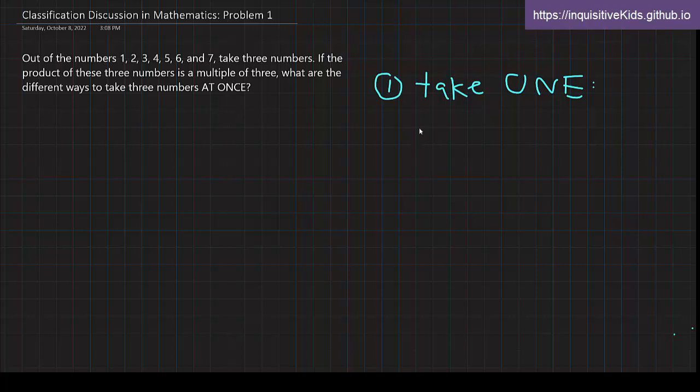So, out of two multiples of 3, we take 1. And then, for the remaining ones, out of the 5 non-multiples of 3, we take 2 more. This will give us 20 different ways.